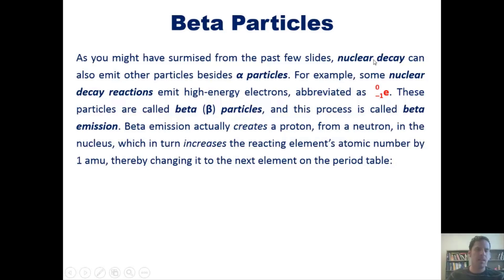Beta emission actually creates a proton from a neutron in the nucleus, which increases the reacting element's atomic number by one, changing it to the next element to the right on the periodic table. Here's an example: if you have iodine emit a beta particle, mathematically it creates xenon. Conceptually, however, it seems really strange. How is that even possible?